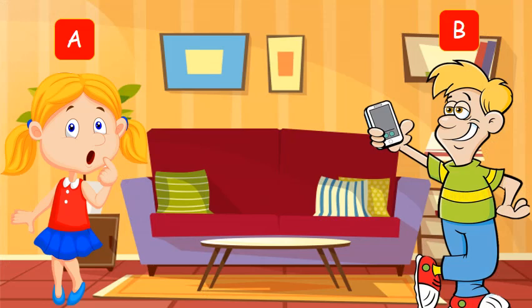The game needs two people — you can ask your brother, sister, mother, or father. Between the two people, one person needs to become Person A and one person needs to become Person B. The person who becomes B can hold a phone.